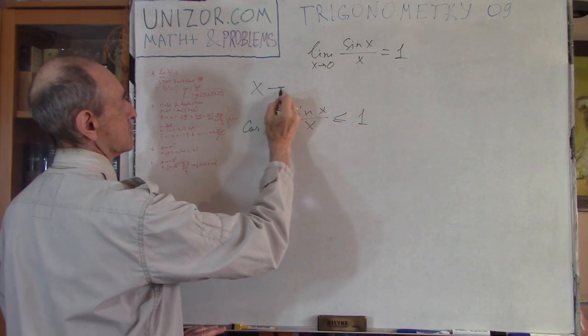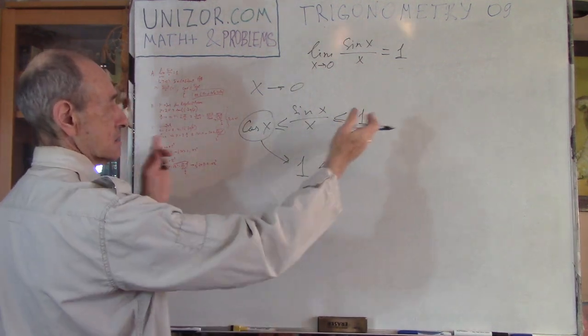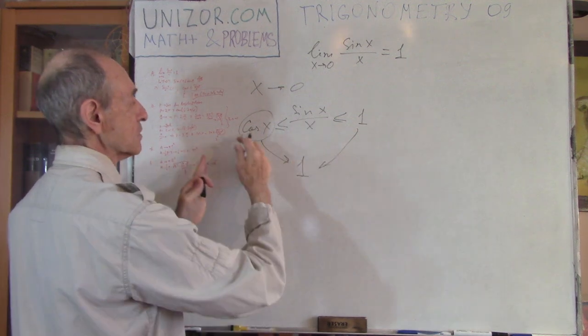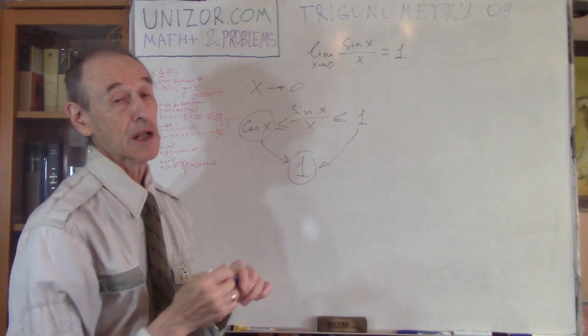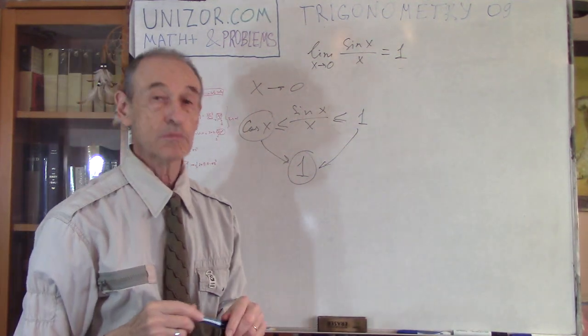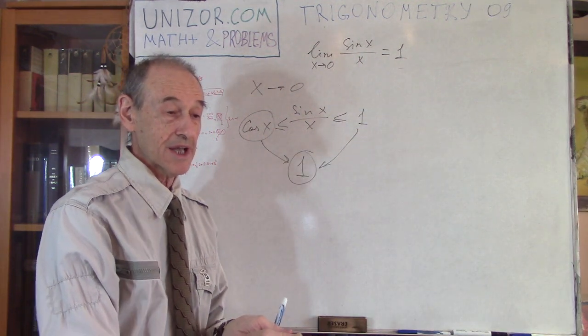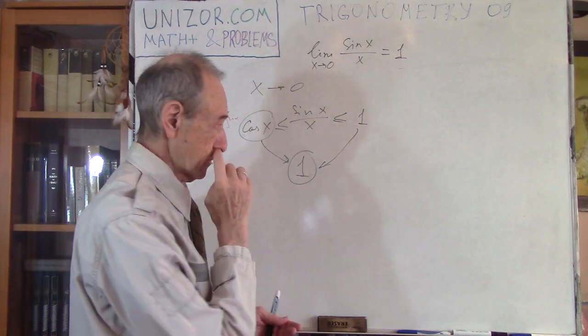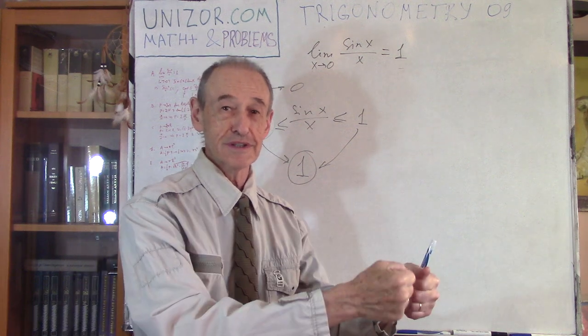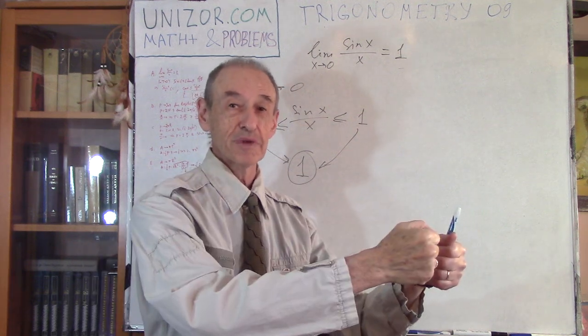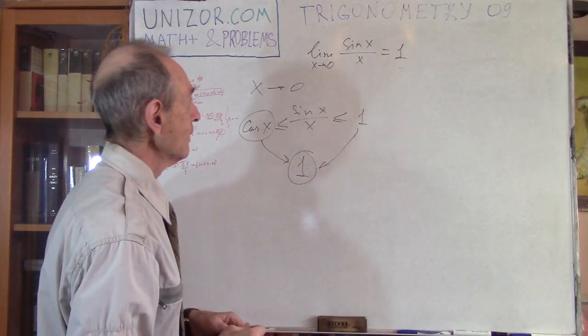As x tends to 0, cosine of x goes to 1, and this equals 1. So sine of x divided by x is always squeezed between two things, and as x goes to 0, the squeeze theorem - which has been proven in the calculus part of the prerequisite course Math for Teens - states that if a variable is between two other variables, and these two other variables are tending to the same value, then something in between also goes there. Sometimes it's called the theorem of two policemen: when two policemen are taking a criminal to a police precinct, both policemen go to the same place and the criminal in between should go to the same place. There is no other way. That's basically the proof of this.